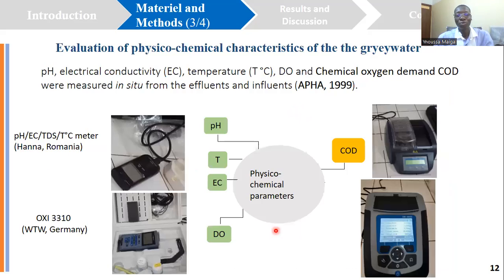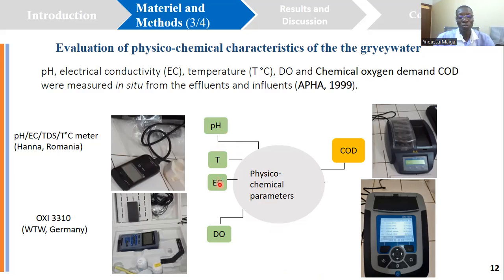After the design, we constructed the greywater treatment unit in two different households. Greywater was collected at the entrance for raw greywater and at the outlet for treated greywater to evaluate different parameters. For example, pH, temperature, and electrical conductivity were measured using a pH/EC meter, and dissolved oxygen was also measured using an oximeter.